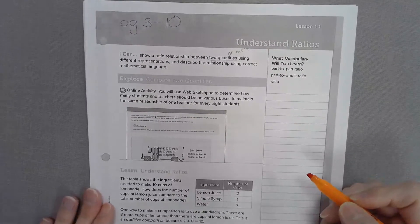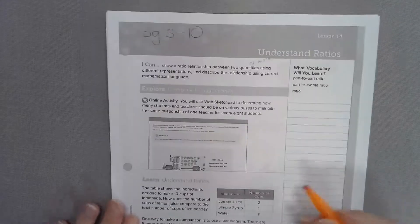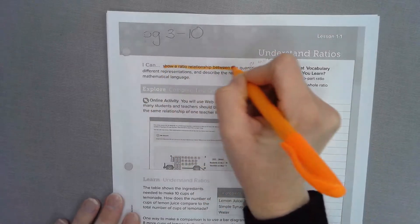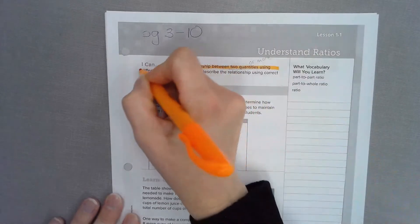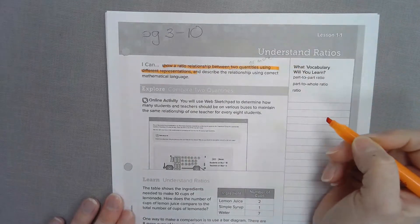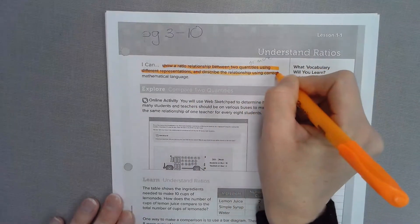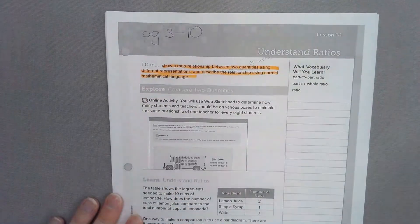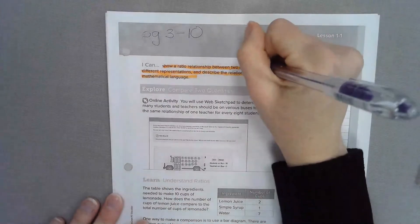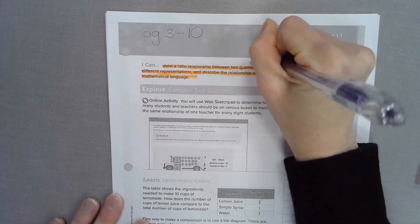I can show a ratio relationship between two or more quantities, we're going to add that word, different representations, and describe the relationship using correct mathematical language. Make sure you write or more above this.